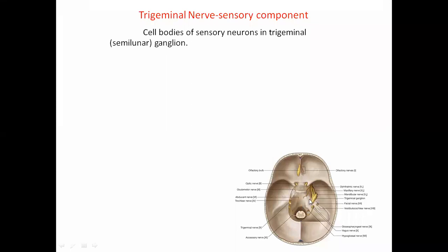The trigeminal ganglion contains sensory neurons. These sensory neurons are located in the trigeminal ganglion, which is a collection of cell bodies outside the central nervous system.